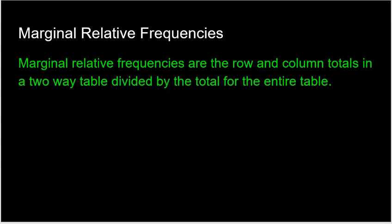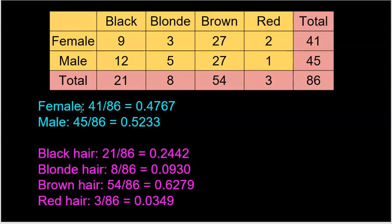First, a couple of terms. Marginal relative frequencies are the row and column totals in a two-way table divided by the total for the entire table. Looking at gender versus hair color, the marginal relative frequencies are nothing more than the totals for every single possible category.